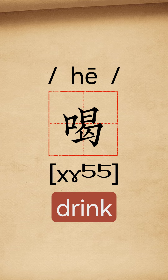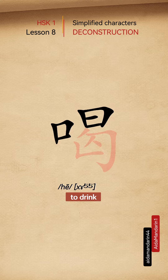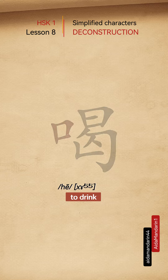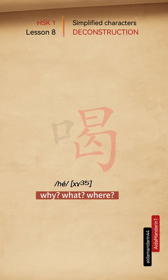喝 means to drink. It has a left-right structure and can be deconstructed into two parts. The left part 口 means mouth. The right part 曷 serves as the phonetic component, providing the sound category.